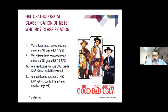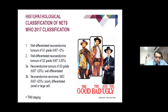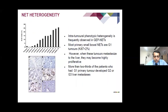The WHO 2017 classification divides tumours into good, bad, and ugly. The good is Ki67 of up to 2%, called well-differentiated neuroendocrine tumour grade 1. Grade 2 is Ki67 of 3–20% or mitosis rate of 3–20 per 10 high-power fields. Grade 3 is also well-differentiated but Ki67 more than 20%. Neuroendocrine carcinoma is generally poorly differentiated with Ki67 more than 20%, often exceeding 55%. The differentiation is mainly by Ki67 and mitosis rate.